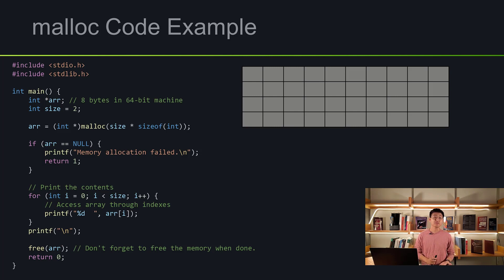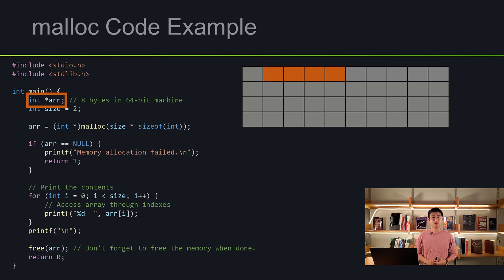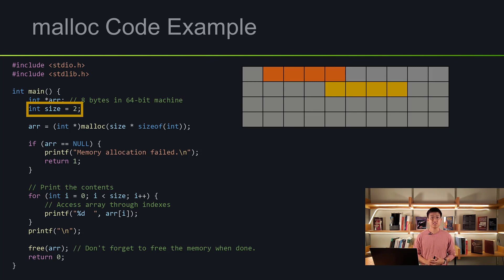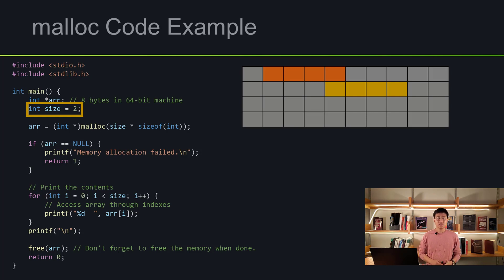Let's look at some examples of malloc. On the left I have the code, on the right I have the memory grid. First, we declare a variable called R — it's an int pointer, taking four bytes of memory. Next, we initialize a variable called size as an int type, also four bytes. Within the malloc, we have size times sizeof(int). Sizeof int is 4 and size is 2, so 2 times 4 gives us 8 — we're telling the computer we want 8 bytes of memory, and they'll all be adjacent to each other.